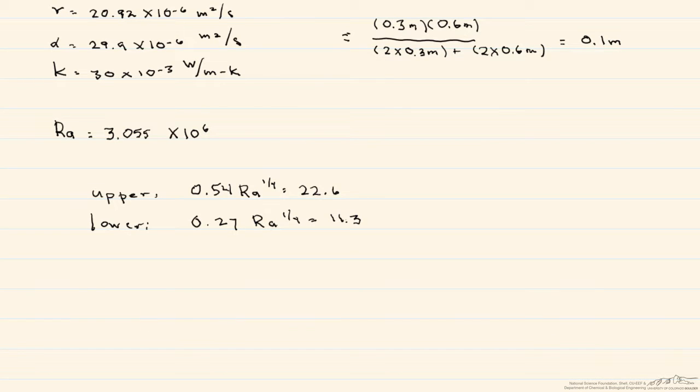Then we go ahead and we calculate our h, which is equal to our Nusselt number times our k divided by this characteristic length. We find that the h of the upper plate is equal to 6.78, and the h of the lower plate is equal to 3.39, and again, the bars over there show that it is an average heat transfer coefficient.